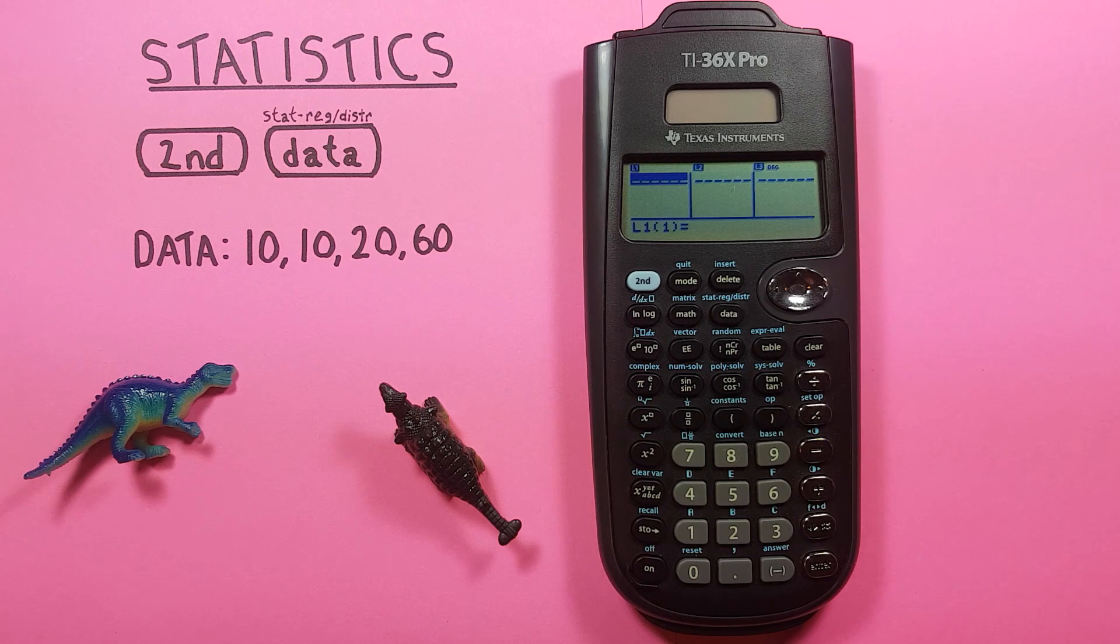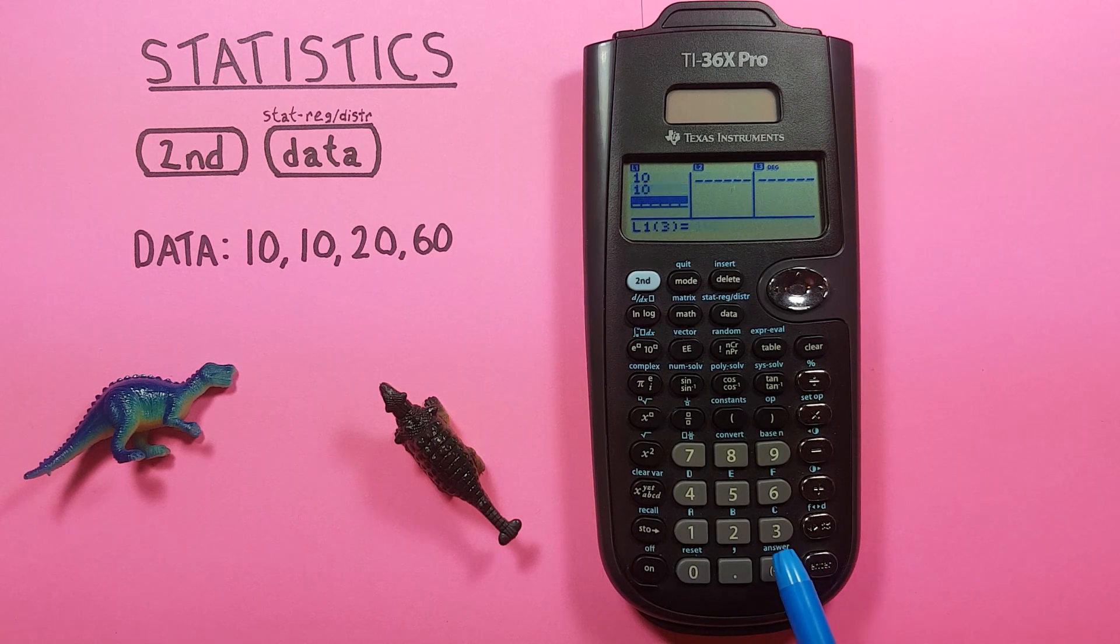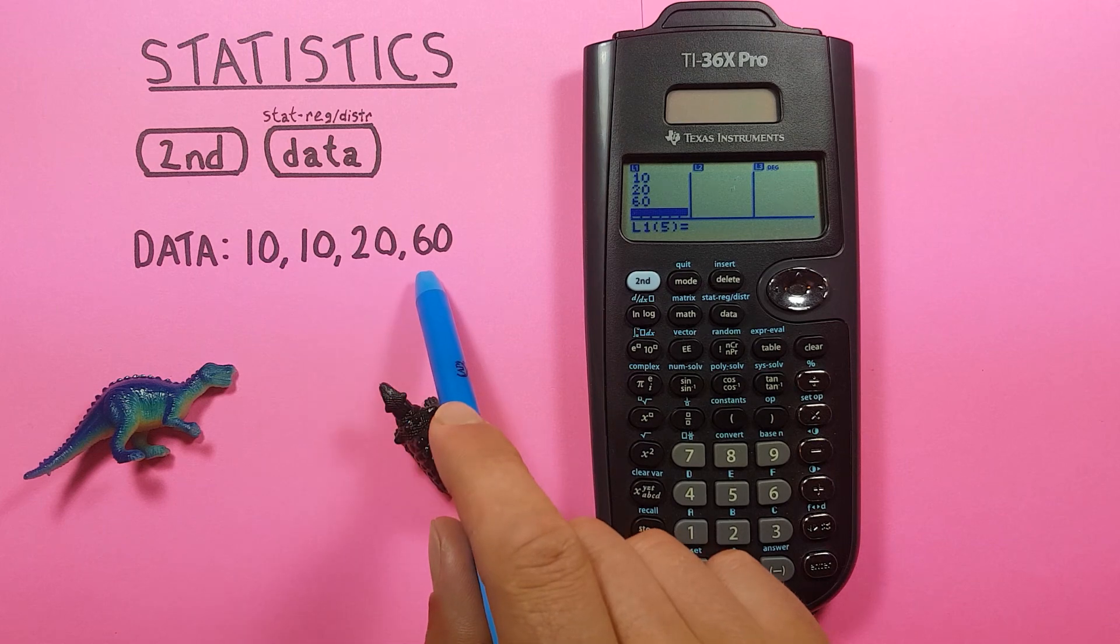We can then enter our data by typing it in, so 10, enter, 10, enter, 20, enter, and 60. Yep, there's our data set.